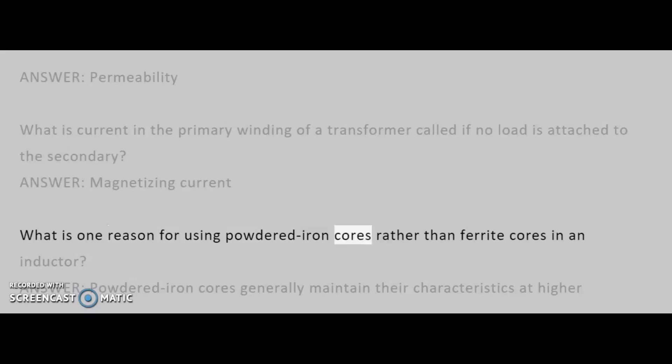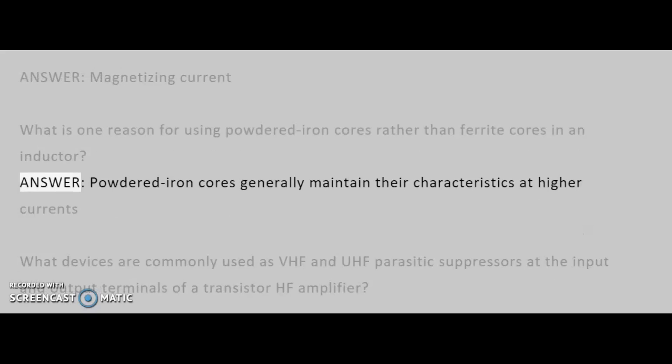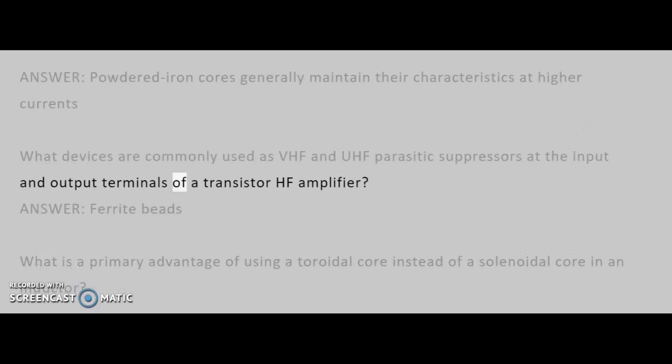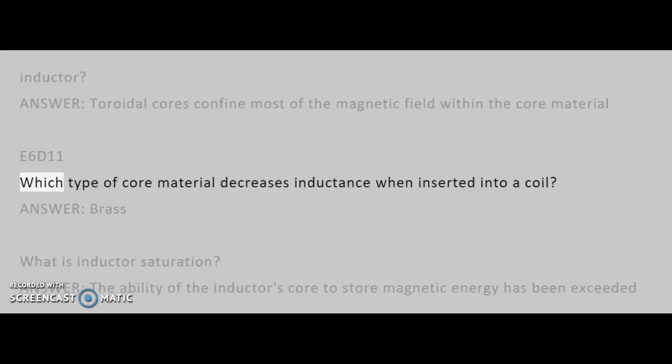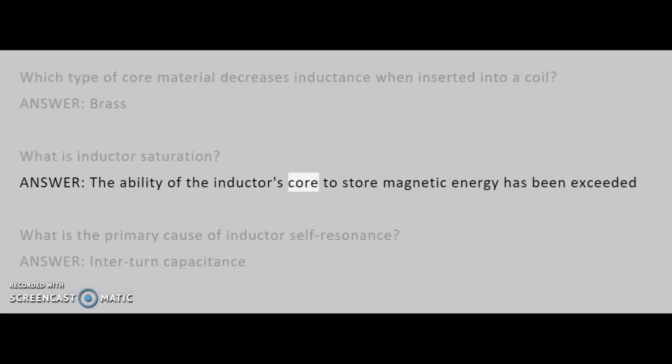What is one reason for using powdered iron cores rather than ferrite cores in an inductor? Answer: powdered iron cores generally maintain their characteristics at higher currents. What devices are commonly used as VHF and UHF parasitic suppressors at the input and output terminals of a transistor HF amplifier? Answer: ferrite beads. What is a primary advantage of using a toroidal core instead of a solenoidal core in an inductor? Answer: toroidal cores confine most of the magnetic field within the core material. Which type of core material decreases inductance when inserted into a coil? Answer: brass. What is inductor saturation? Answer: the ability of the inductor's core to store magnetic energy has been exceeded. What is the primary cause of inductor self-resonance? Answer: interturn capacitance.